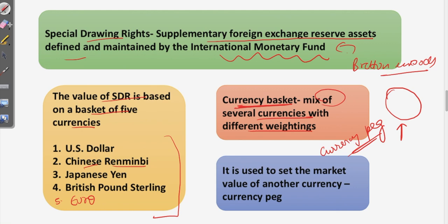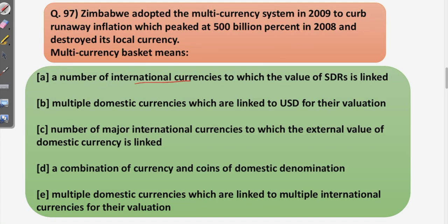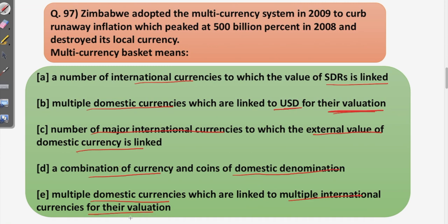Moving back to the question options: option A — number of international currencies to which the value of SDR is linked; option B — multiple domestic currencies linked to USD; option C — number of major international currencies to which the external value of the domestic currency is linked; option D — combination of currency and coins of domestic denomination; option E — multiple domestic currencies linked to multiple international currencies. The correct answer is option C.